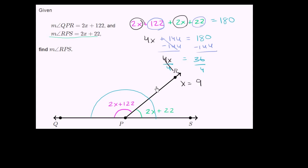Now, remember, we're not done yet. They didn't say solve for x. They said find the measure of angle RPS, which is 2 times x plus 22, or 2 times 9 plus 22, which is 18 plus 22, which is equal to 40. So the measure of angle RPS is 40 degrees.